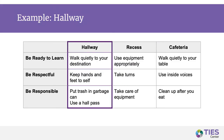Let's walk through an example of how we can use UDL principles to create expectations that are accessible to all students. We will revisit the PBIS matrix from slide 4 and use the highlighted hallway expectations that align with the general expectations of be ready to learn, be respectful, and be responsible. The hallway expectation for be ready to learn is to walk quietly to your destination; for be respectful, keep hands and feet to self; and for be responsible, put trash in the garbage and use the hall pass.